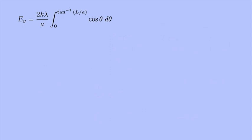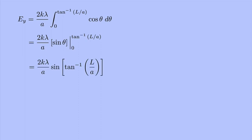This integral is pretty easy to do. The integral of cosine theta d theta is just sine theta. I evaluate it at the endpoints, 0 and inverse tan of L over a. Since the sine of 0 is 0, I just have the sine of the inverse tangent of L over a, with some constants out front.